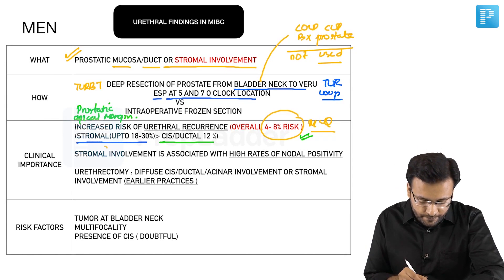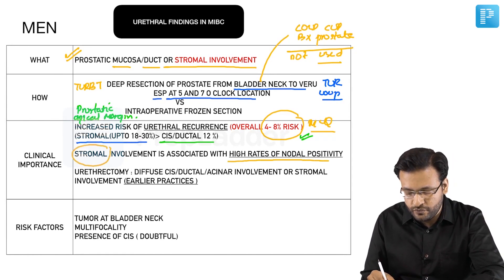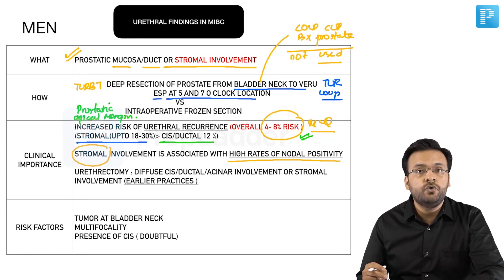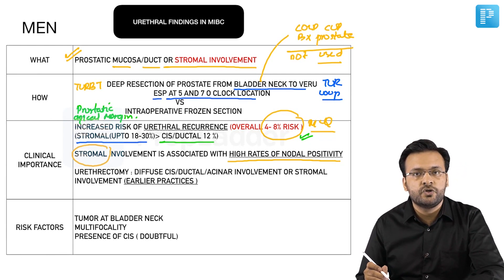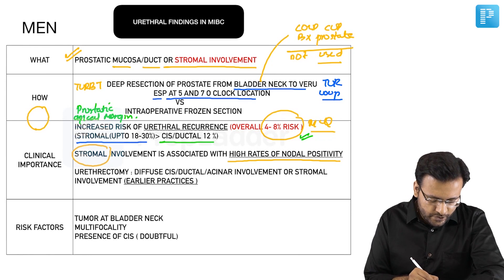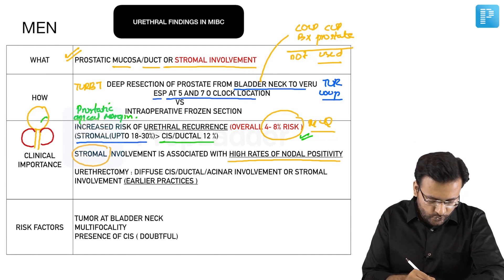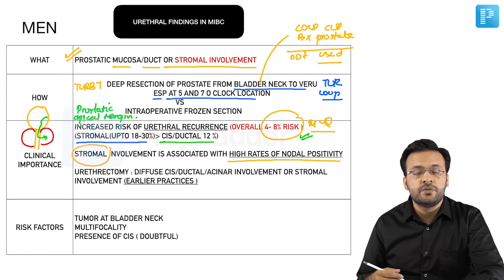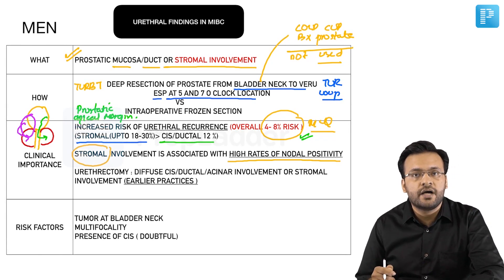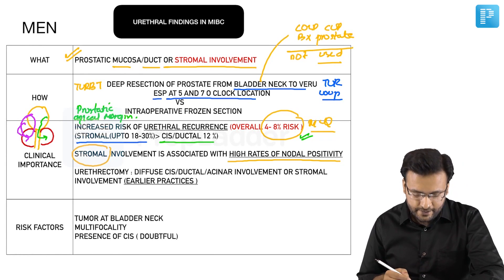The second clinical importance is that stromal involvement of the prostate is associated with high rates of nodal positivity, meaning the disease has a higher chance of being locally advanced. There are two types of stromal involvement seen in bladder cancer: the first and more common type is extension of the bladder tumor via the prostatic urethral mucosa into the stroma. The second type is the disease spreading outside the bladder to involve the prostate from outside in; both are classified as T4a.